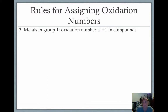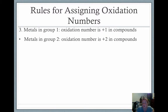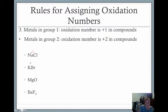Metals in group one have an oxidation number of plus one in a compound — they each give their electron away, making them more positive, as they have one valence electron. Metals in group two have an oxidation number of plus two, as they give away two valence electrons. For example, potassium is plus one, magnesium is plus two, barium is plus two. This helps figure out the other element's charge: chlorine must be minus one to keep the overall charge at zero. Bromine is also minus one, and oxygen is minus two.